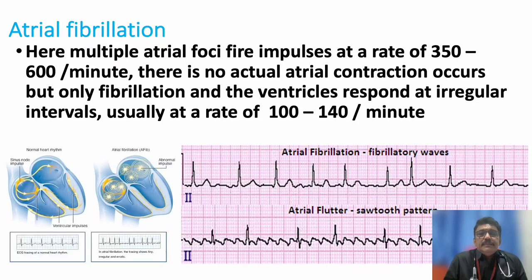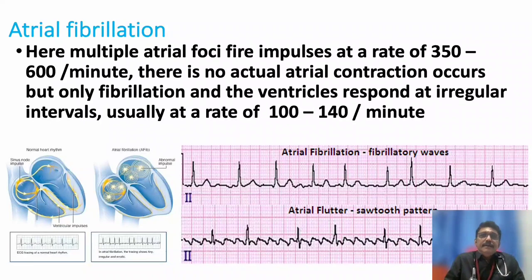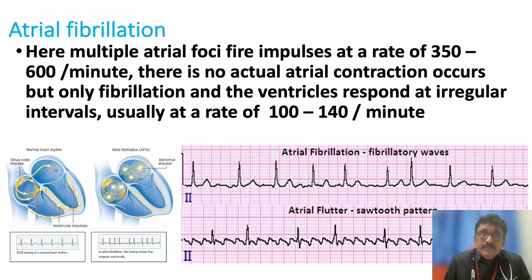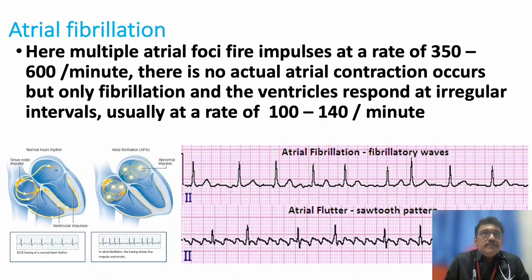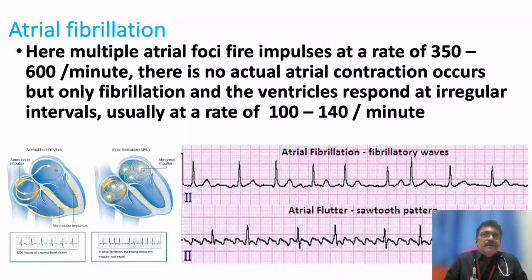In atrial fibrillation, the atria beat at a rate of 350 to 600 beats per minute — around 600, which is nearly 10 times the normal rate. When beats are very high from the atrium, all these beats never go to the ventricle. If they did, the ventricular rate would be 600 and the patient would go into failure and death. The body has a mechanism to block this unwanted tachyarrhythmia, and at the AV nodal junction conduction is regulated.